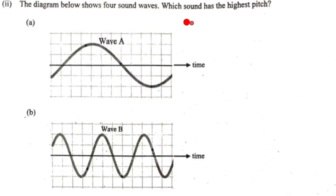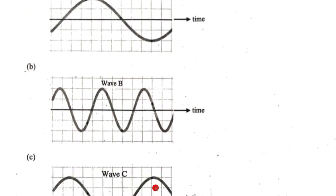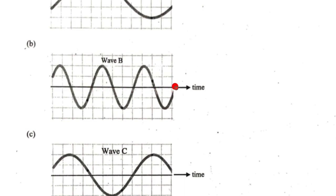The diagram shows 4 sound waves. Which sound has the highest pitch? Now this is less than 1 wave. Here you can see this is nearly 3 waves. So more the number of waves within the given time, more will be the frequency.